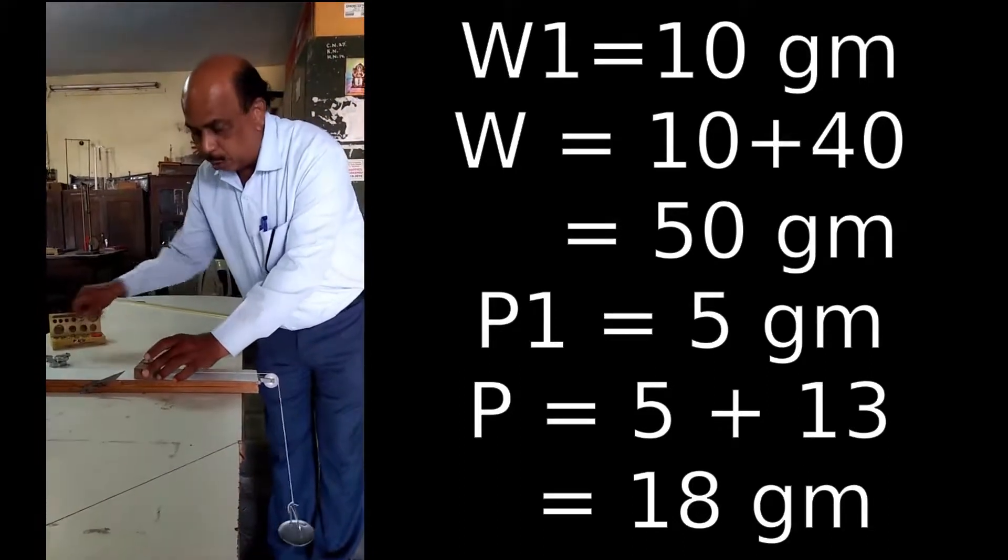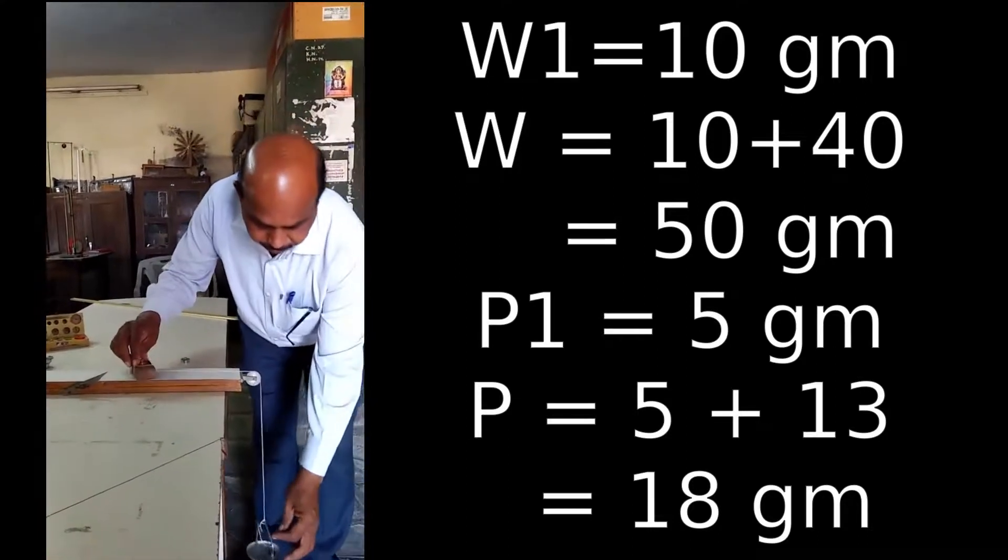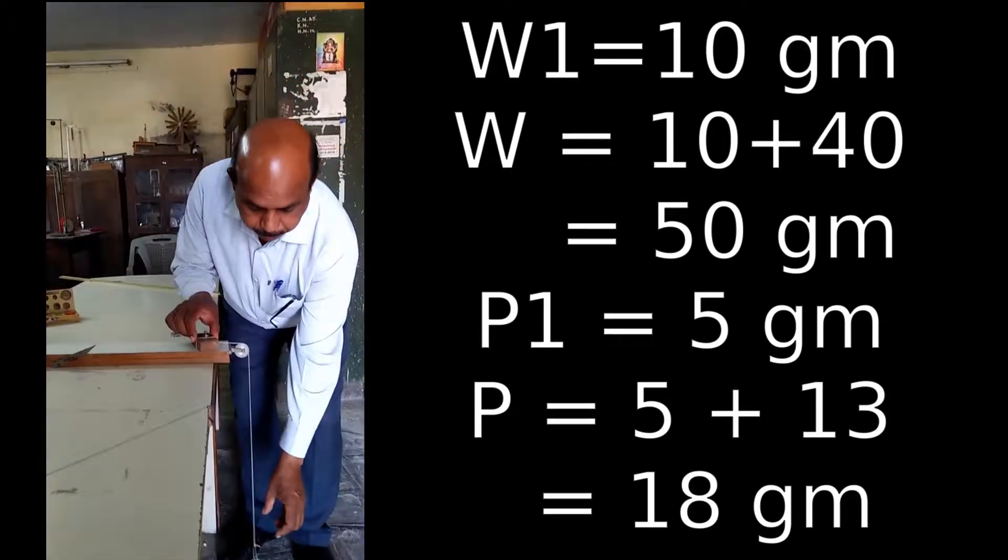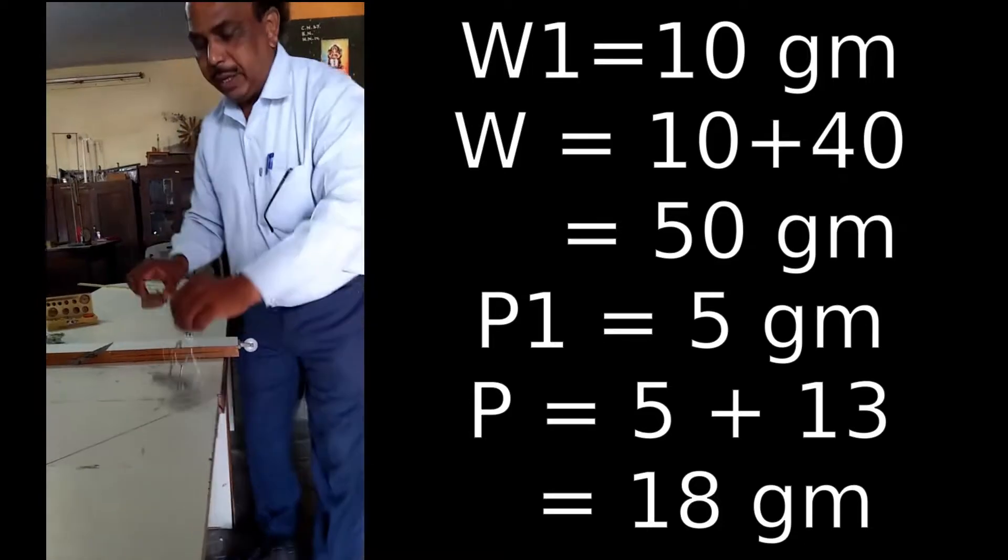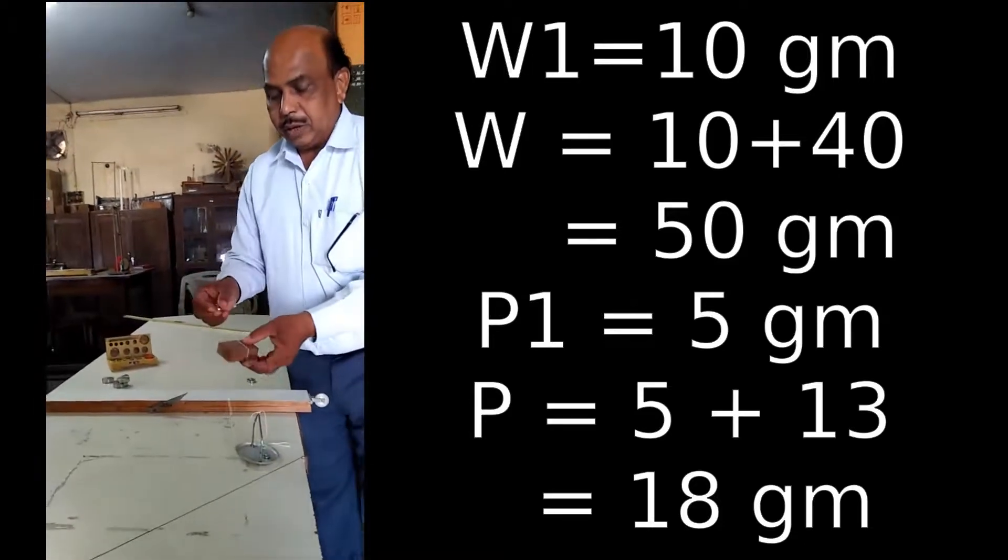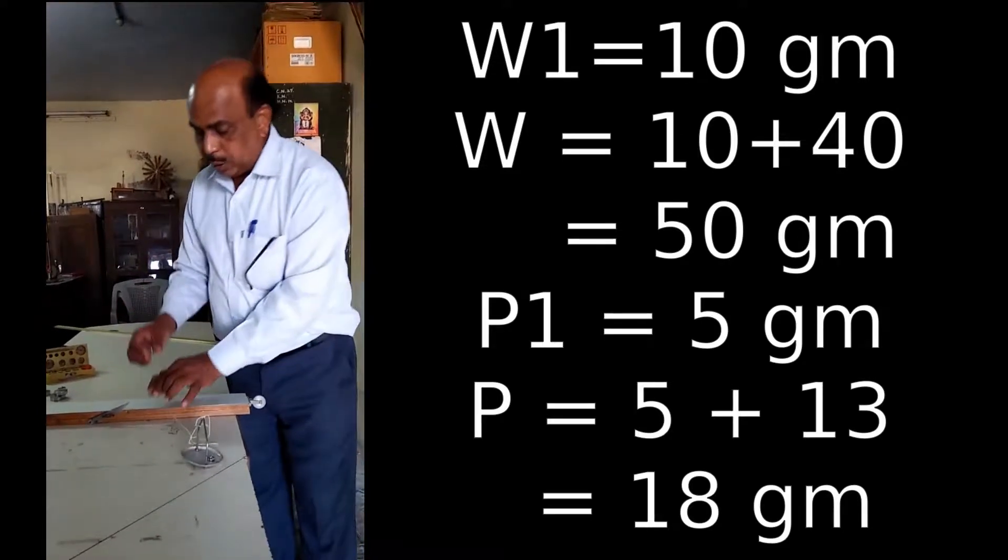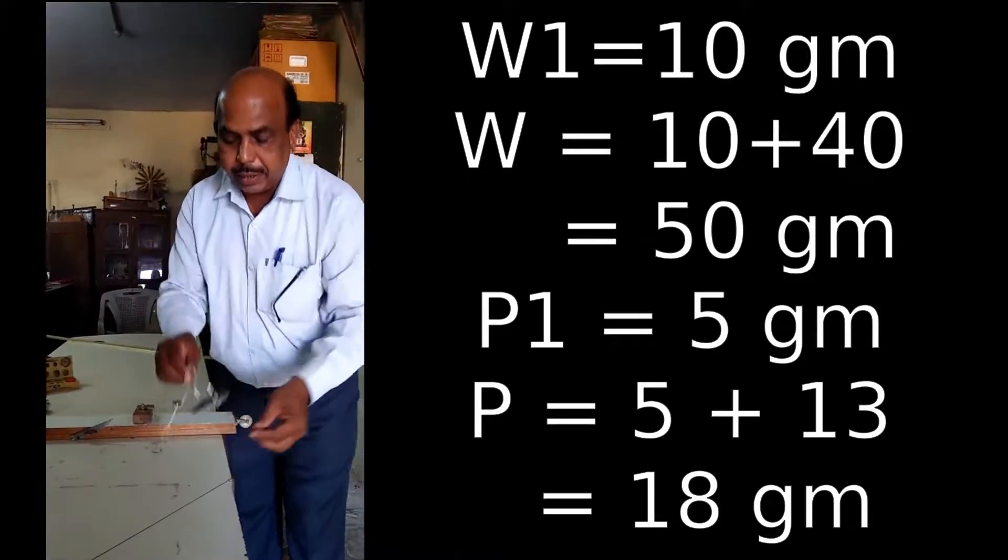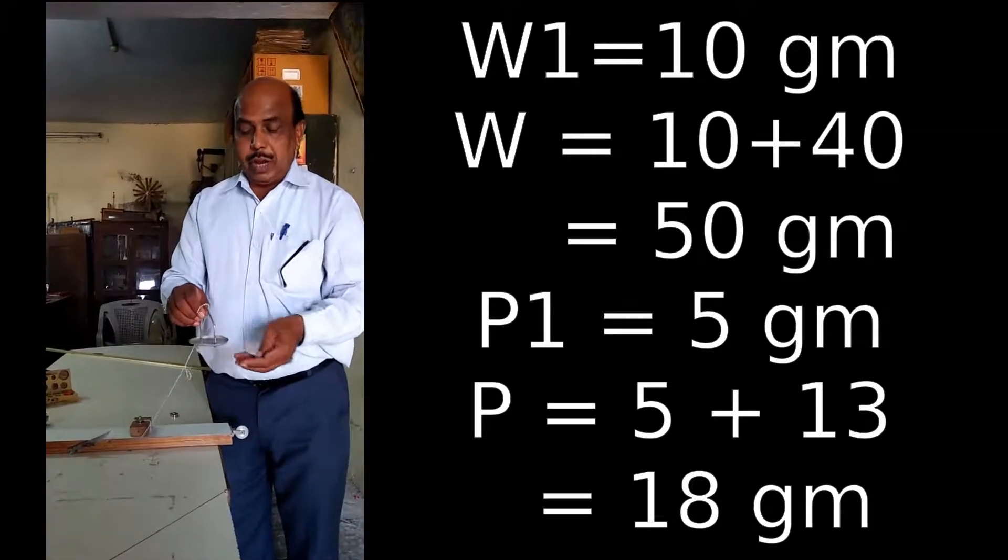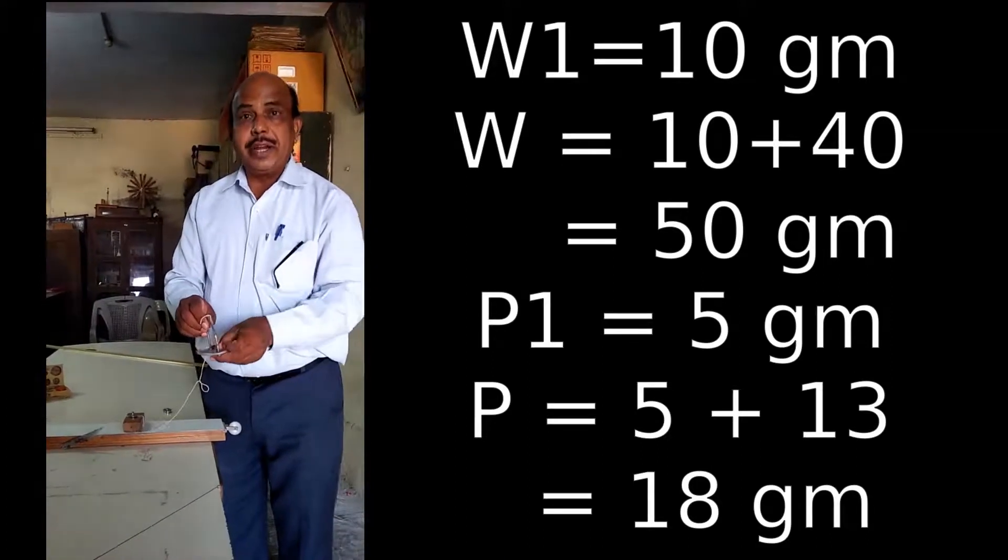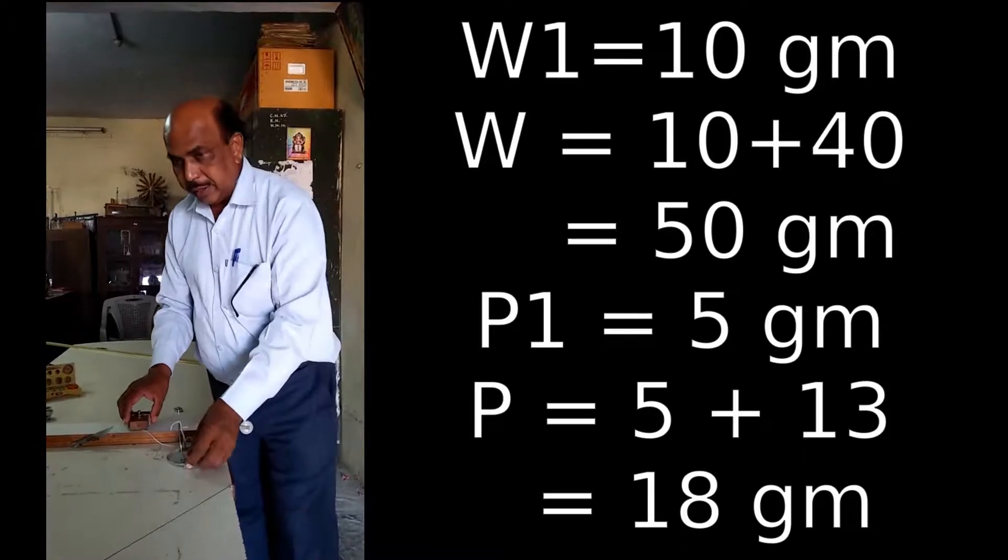Therefore, we measure W₀, 40 plus 10 which is equal to 50. And therefore, the pan reading is 13 plus 5, it means 18. Now, second reading.